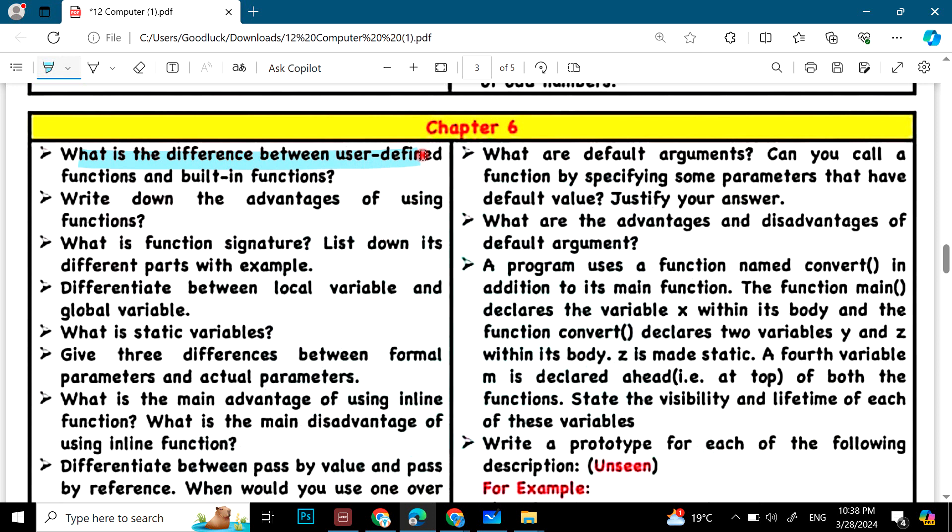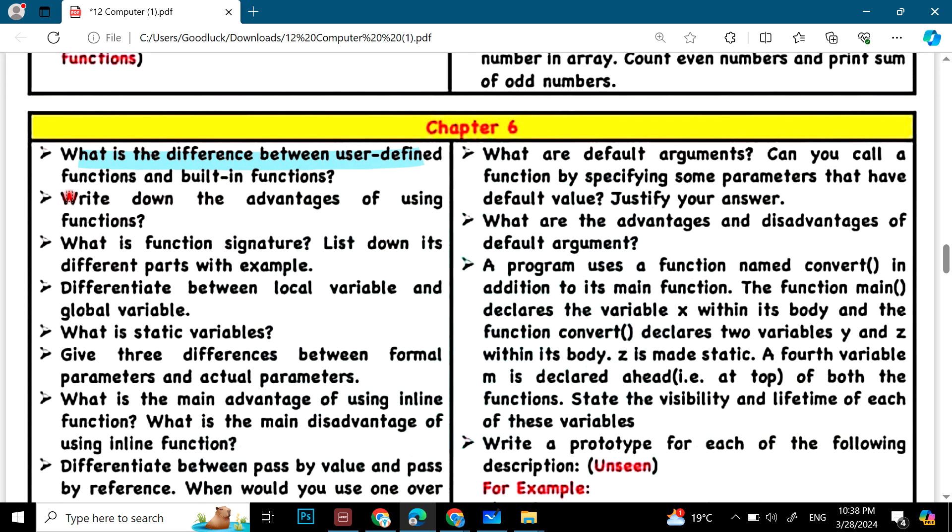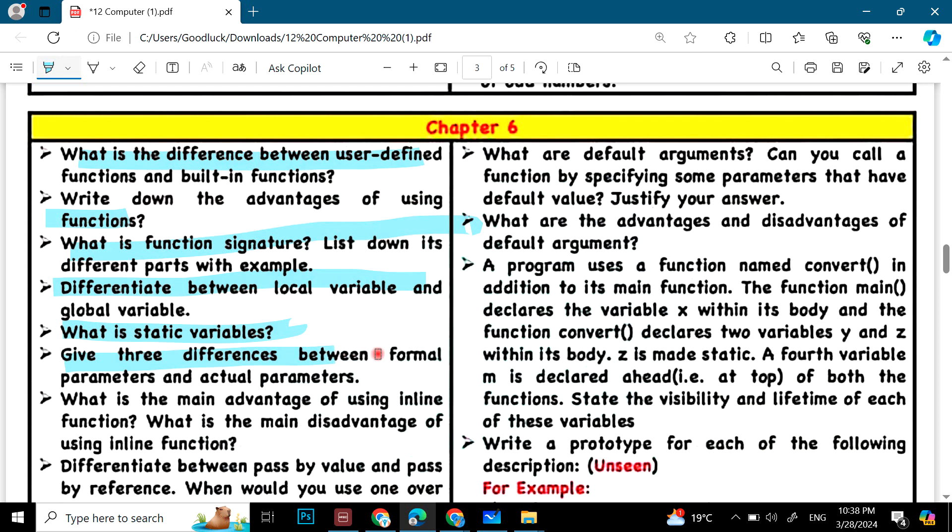Chapter 6. What is the difference between user defined functions and built in functions? Write down advantages of using functions. Function signature, differentiate between local variable and global variable, static variables, give three differences between formal parameters and actual parameters. Main advantage of using inline function. Default arguments. Advantages and disadvantages of default arguments.